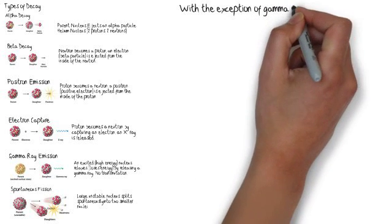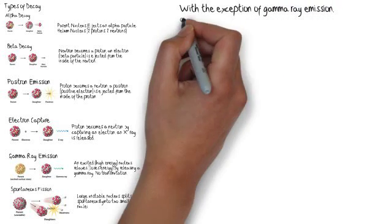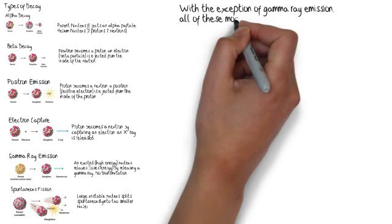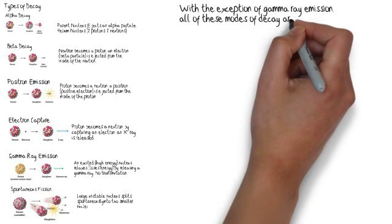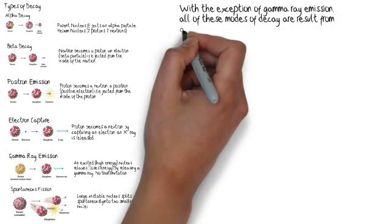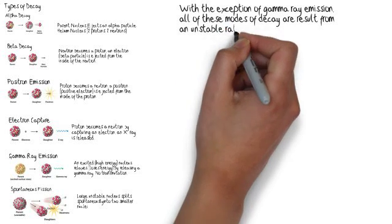So, with the exception of gamma ray emission, all the modes of decay that we're talking about are due to an unstable ratio of protons to neutrons in the nucleus.